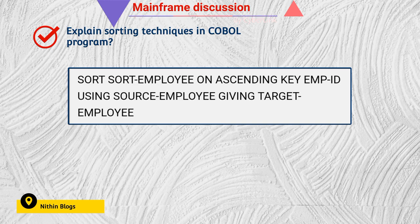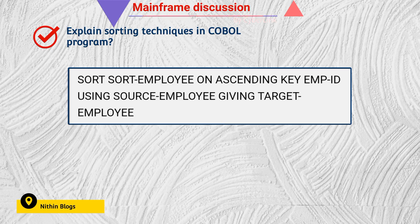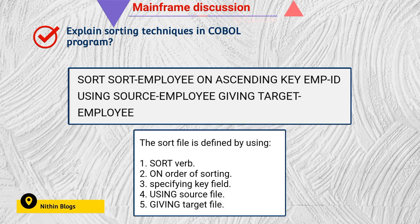The SORT keyword is mandatory. SORT EMPLOYEE is a work file — it is an interface between the source file and the target file. Here the source file is SOURCE-EMPLOYEE and the target is TARGET-EMPLOYEE. ON determines the order of sorting — ascending or descending. The KEY specifies EMPLOYEE-ID. USING provides the source file and GIVING provides the target file where all sorted records are stored.